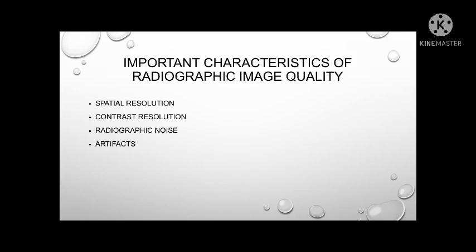OID is also a factor that affects spatial resolution. OID is the distance between the object or part under examination and the image receptor. A longer distance between the object and image receptor will cause magnification. Therefore, the outline of the image will be blurred, causing a decrease in spatial resolution.